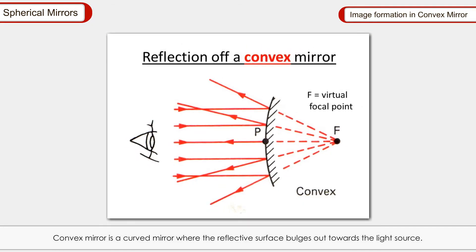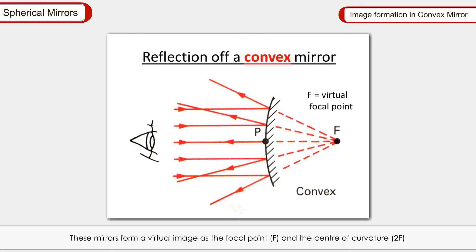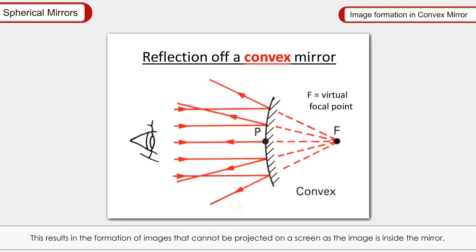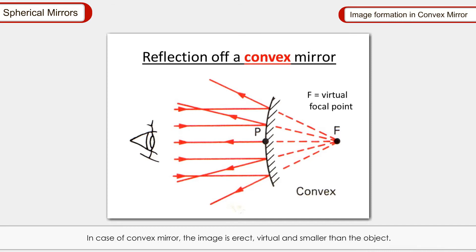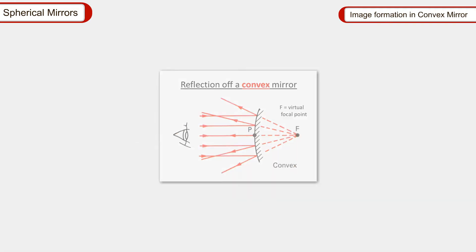Image formation by a convex mirror: A convex mirror is a curved mirror where the reflective surface bulges outward towards the light source. This surface reflects light outwards and is not used to focus light. These mirrors form a virtual image, as the focal point F and the centre of curvature 2F are imaginary points inside the mirror that cannot be reached. The image looks smaller than the object from a distance but gets larger as the object approaches the mirror. The image in a convex mirror is always erect, virtual, and smaller than the object.